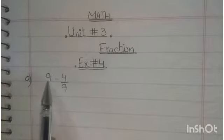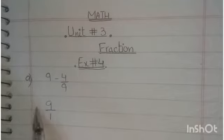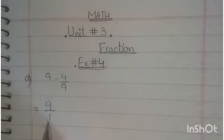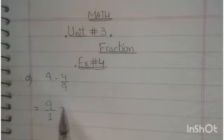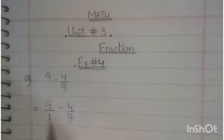First step students: you write the whole number as a fraction in the form like 9 by 1. You have one, right? So you write 9 by 1. Next, 4 by 9 you write as it is. Now you have fraction minus fraction.